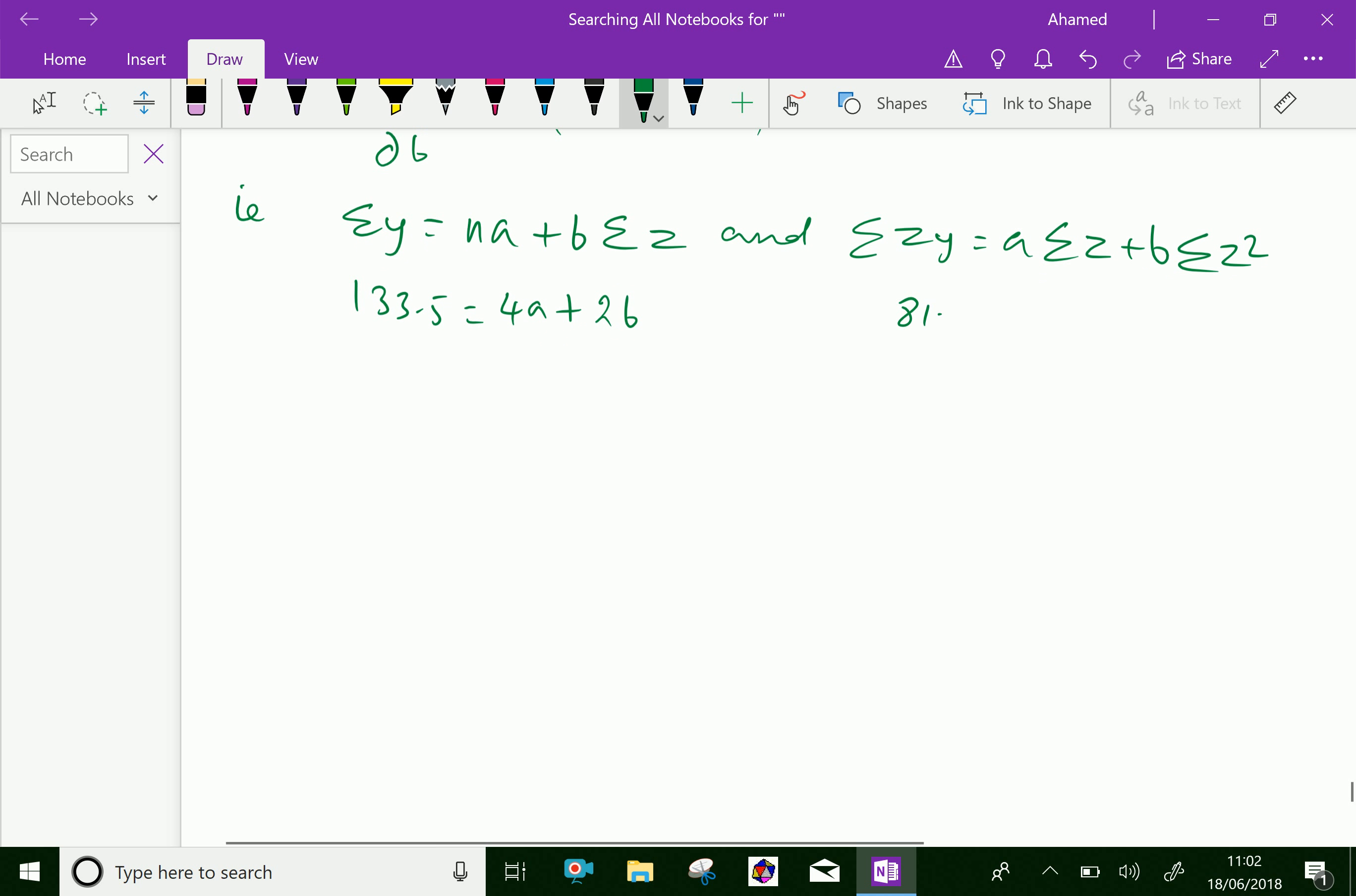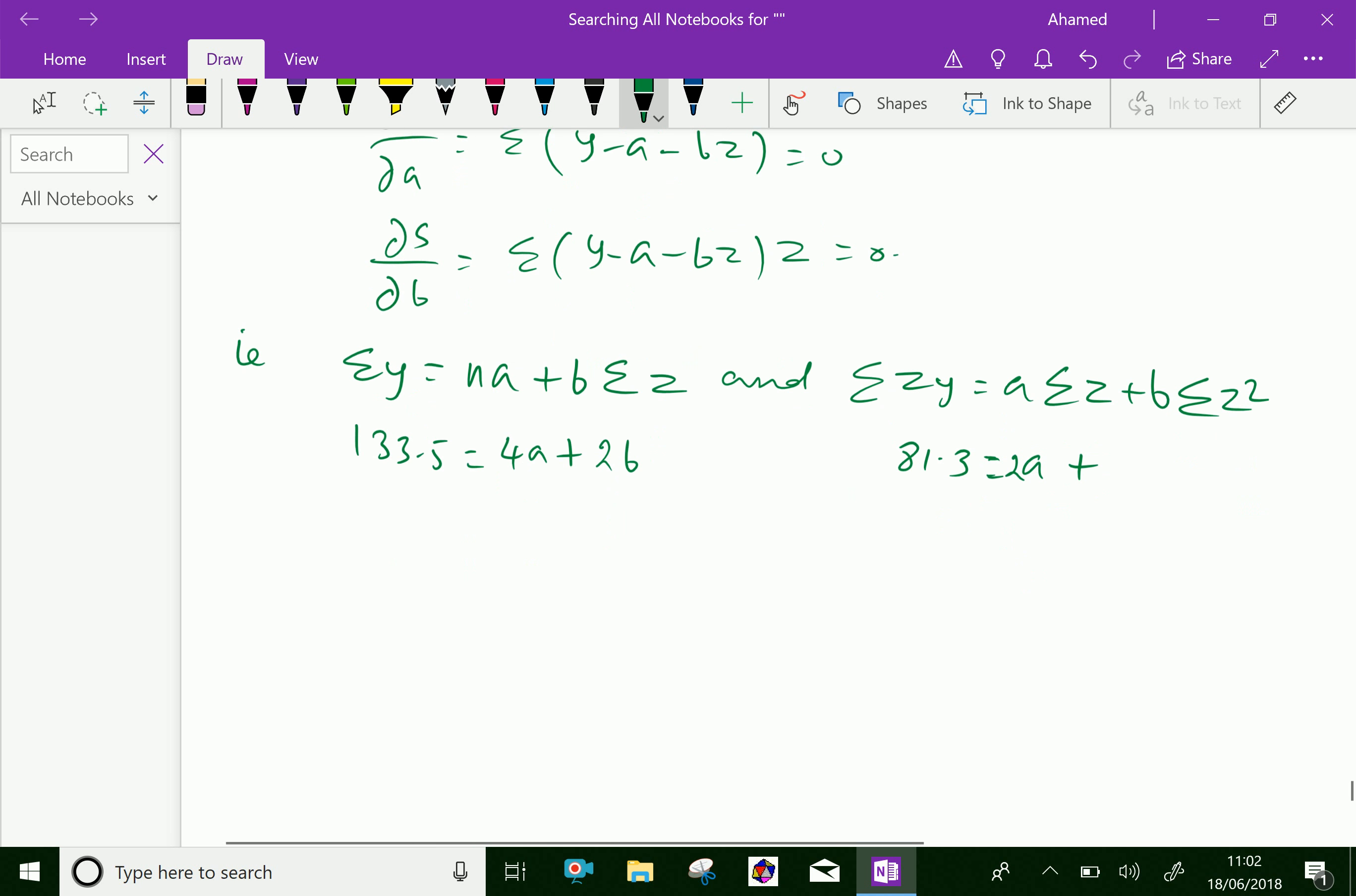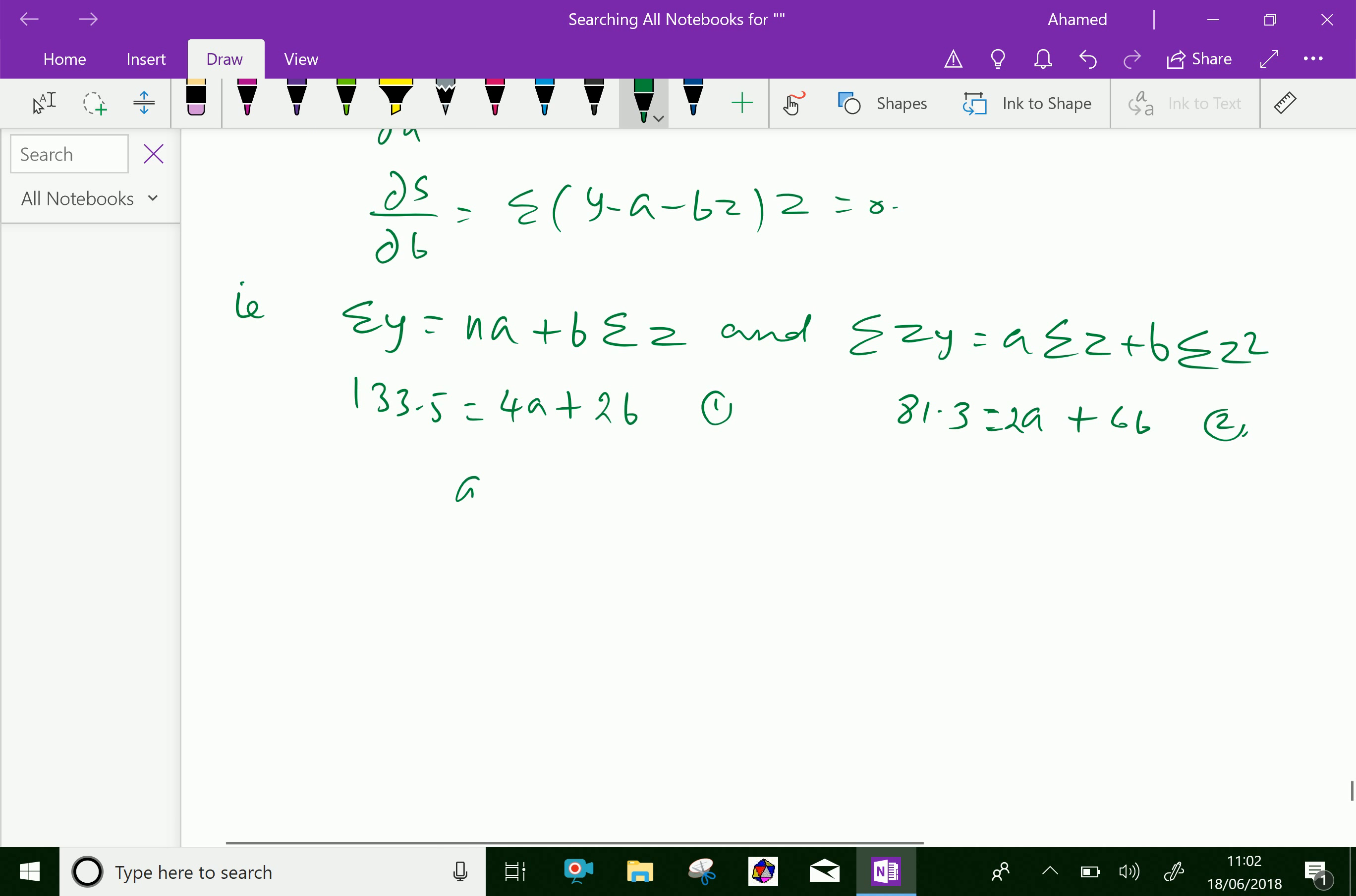Then, second equation is, sigma zy equal to 81.3 equal a sigma z, and sigma z is 2, that is 2a, plus sigma z square is 6, that is 6b. This is equation 2, this is equation 1. By solving equation 1 and 2, we get a equal 31.92, and b equal 2.91.